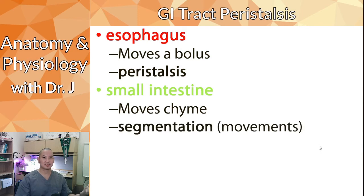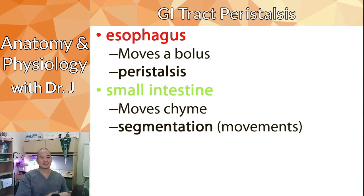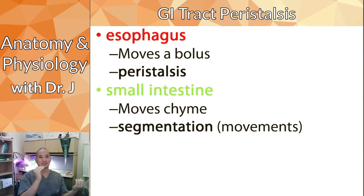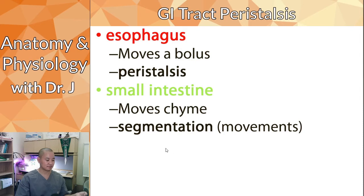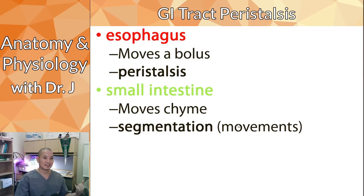The small intestine does something called segmentation, or segmental movements. Instead of just moving contents in one direction, it kind of does a cha-cha — it goes back and forth a little bit. This increases mixing and delays digestion time, but increases the chance that the chyme mixes with bile from the gallbladder and liver, and also pancreatic enzymes.